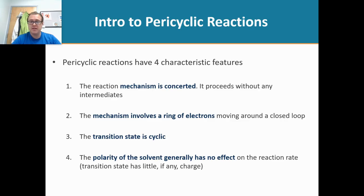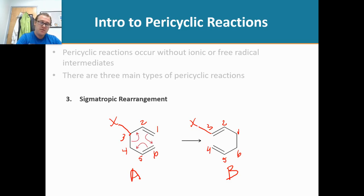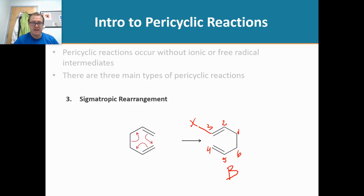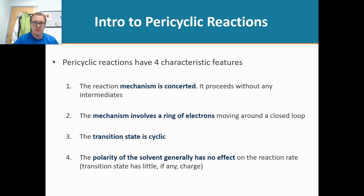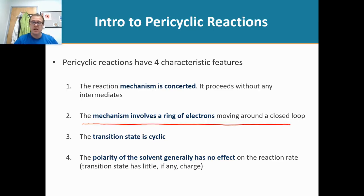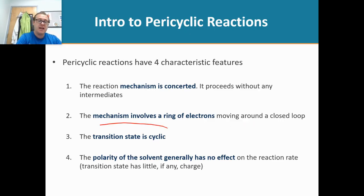The reaction mechanism is concerted, meaning these bonds breaking and forming are happening at the same time. When they happen at the same time, we're not going to generate any ionic or radical intermediates. The mechanism of the movement of those electrons is in a ring and in a closed loop — the transition state is cyclic.